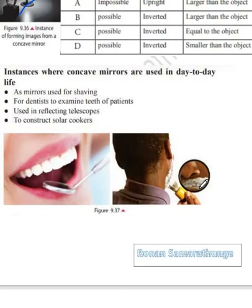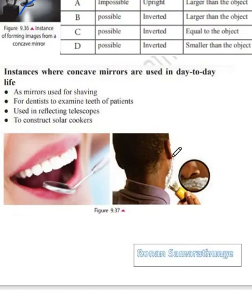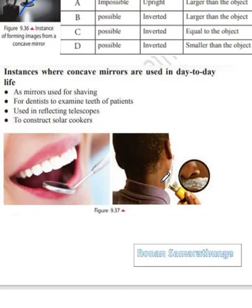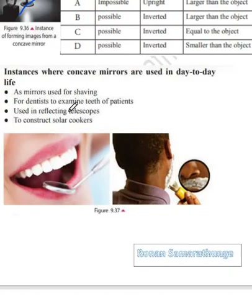You may ask where you find these mirrors. You find them in so many places. Normally, people who shave their faces — you can ask your fathers — they use a concave mirror when they shave in order to get a proper shave. A concave mirror is also utilized by dentists to examine the teeth. Furthermore, it is utilized in telescopes and also in solar cookers. If you're free, just go through the internet and YouTube and find videos about how these things operate.